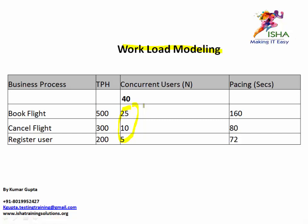This is the WLM — workload modeling — for our peak load test. We spent a good amount of time understanding this WLM document in the first video where I showed how to design the load test. In this series, watch all four videos together to get a complete grip on everything. We made the assumption that we're running the test with Book Flight, Cancel Flight, and Register User. This workload modeling sheet is usually given to you by your lead, and from that sheet: Book Flight is 25 users, Cancel Flight is 10, and Register User is 5.